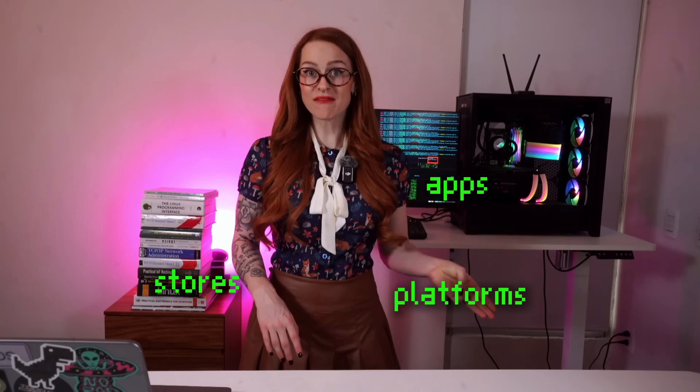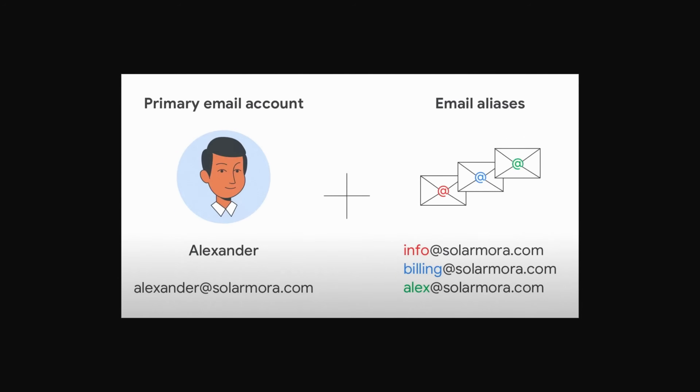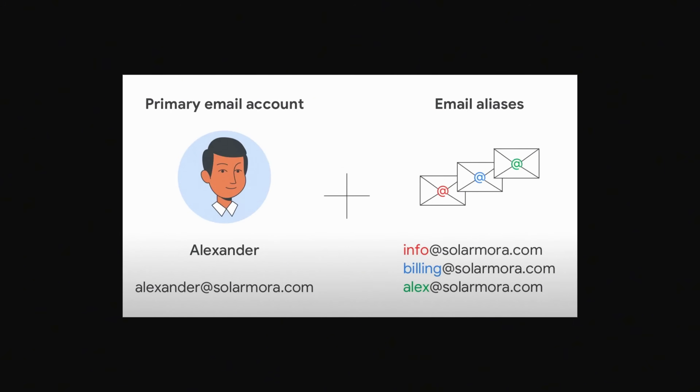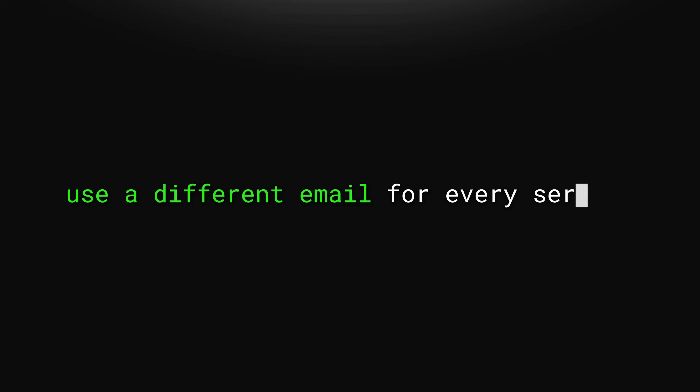The fix is simple: stop using the same identifiers for everything. Start with your email. Companies track you across apps, stores, and platforms because you keep giving them the same address. The easiest upgrade is email aliasing. You can use SimpleLogin, Proton aliases, or Fastmail aliases. Use a different email for every service — every login then becomes its own identity thread.